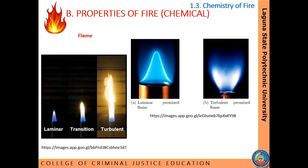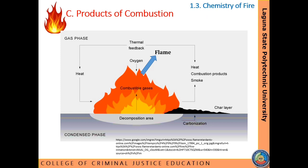Based on smoothness of flow, flames are classified as laminar or turbulent. If particles follow a smooth path through a gaseous flame, it is laminar. Those having unsteady, irregular flows as physical size, gas density, or velocity increases are turbulent. All laminar gas flows tend to become turbulent.